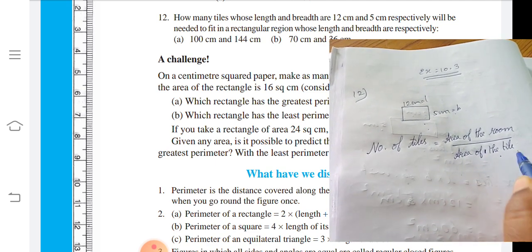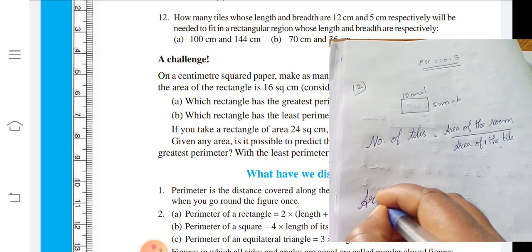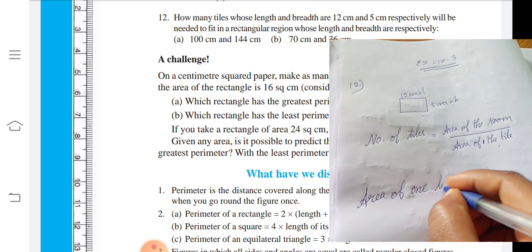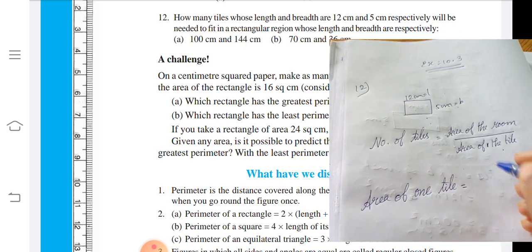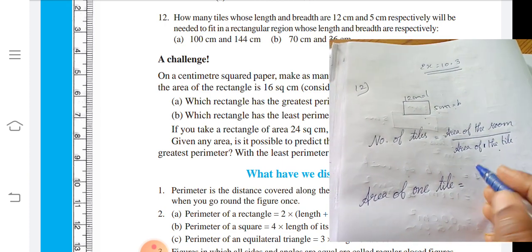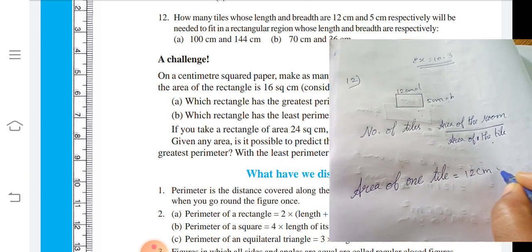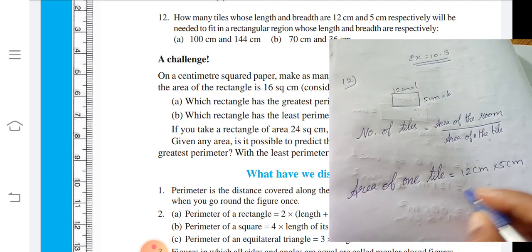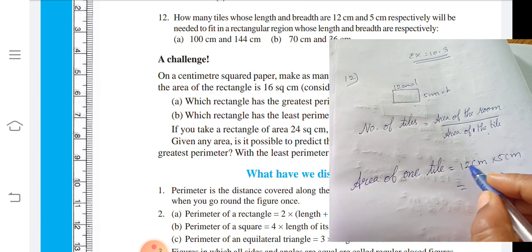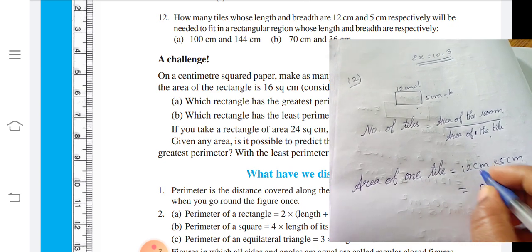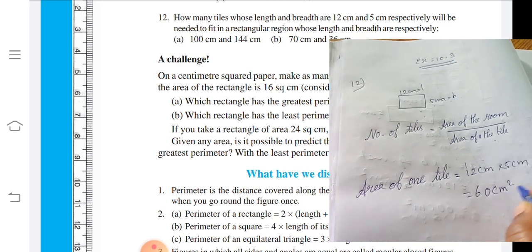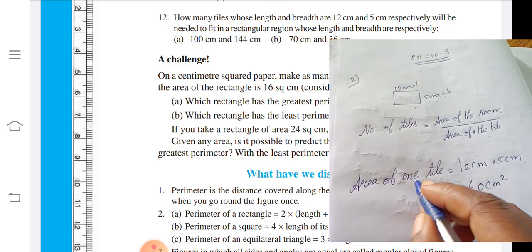Area of one tile: 12 times 5. So 12 cm multiplied by 5 cm. cm times cm equals cm square. 5 times 2 is 10, 0 with remainder 1. 1 times 5 is 5, 5 plus 1 is 6. So 60 cm square.